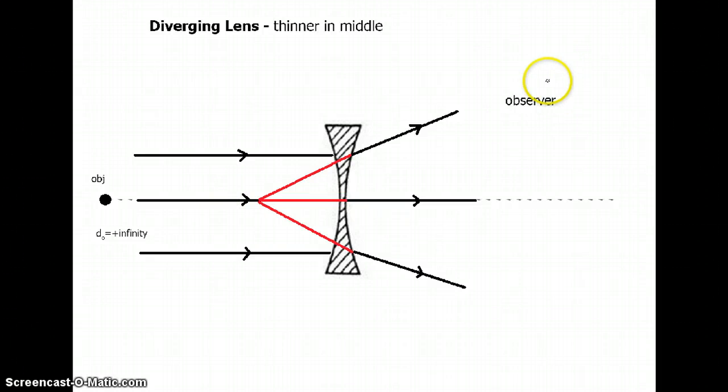So for an observer over on this side, these light beams would appear to emanate from a point right here, so that's where the image will be, and we again give a special name to that point. It's the point that light will appear to emanate from if it's actually coming from infinity and that once again is called the focus.